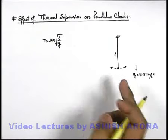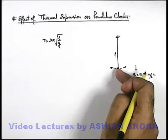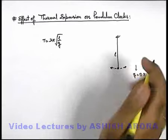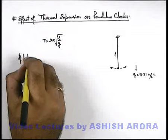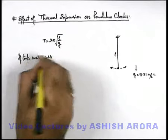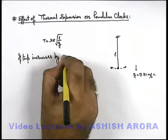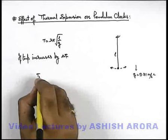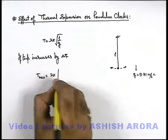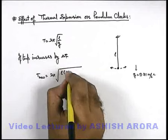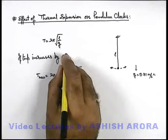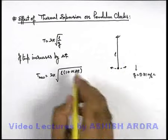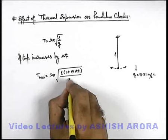Now, if the pendulum is made up of some metal — which is generally the case in pendulum clocks — on increasing temperature the length of the pendulum increases. If temperature increases by ΔT, the new time period will be 2π√(l(1 + αΔT)/g), where α is the coefficient of linear expansion for the material of the pendulum.